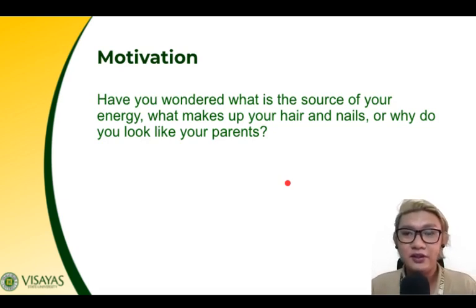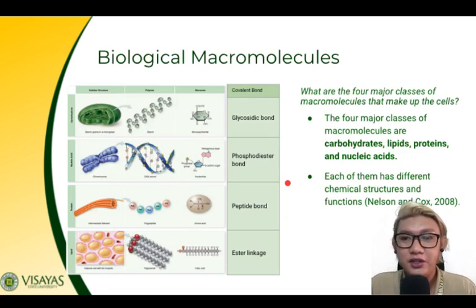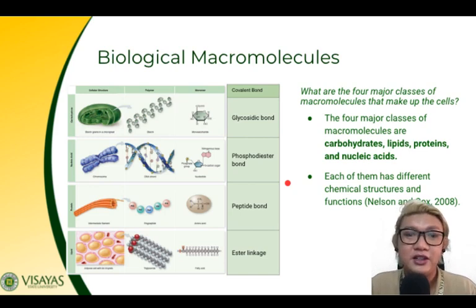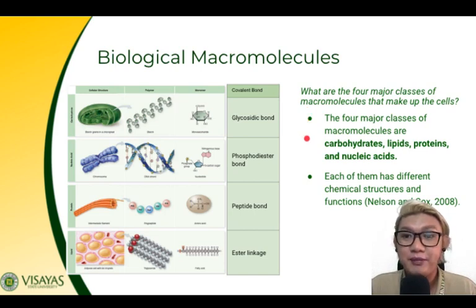So what are biological macromolecules? Biological macromolecules are large molecules that are essential for the survival of every living organism. What are the four major classes of macromolecules that make up the cells?